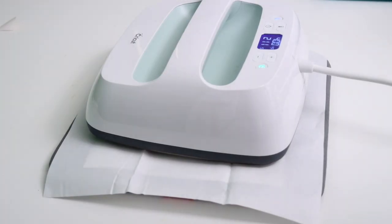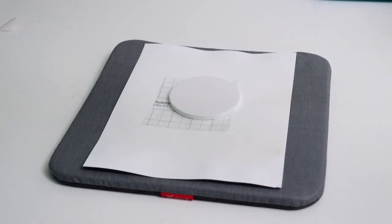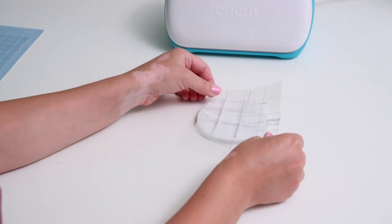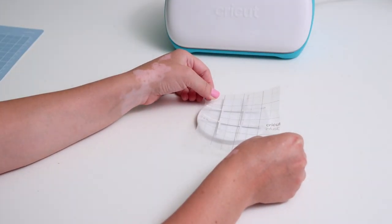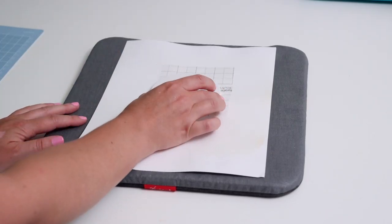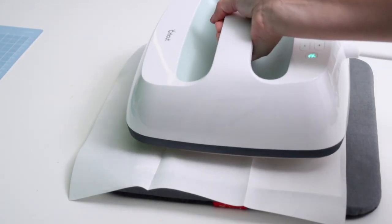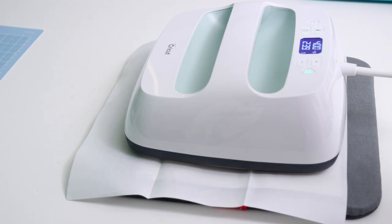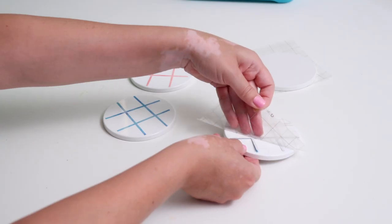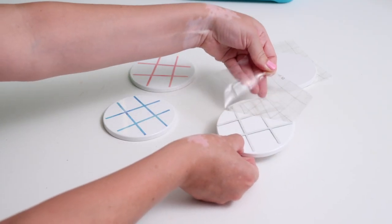Then I set my EasyPress 2 over top for 400 degrees, 240 seconds, and I let it do its thing. We're going to go ahead and repeat this whole process for all four of the coasters, so just putting that facedown, another piece of butcher paper, and then setting that EasyPress 2 right on top and clicking Go. So once it is cool enough, we can pull away the Infusible Ink backing.